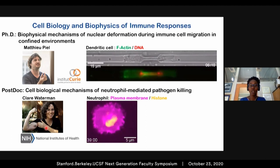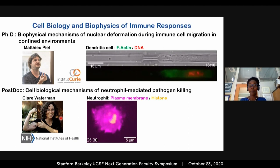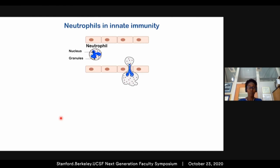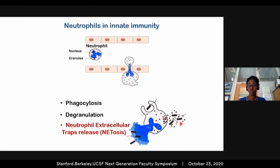After my PhD, I joined the lab of Claire Waterman at the NIH to gain expertise in cell and molecular biology. There, I worked on the cellular mechanism of a particular type of neutrophil-mediated pathogen killing: neutrophil extracellular trap release. This process is governed by the nucleus again. Neutrophils are white blood cells in the circulation from which they can be recruited to sites of infection, where they can kill pathogens either by internalizing them or by extracellular killing — including releasing their DNA during NETosis.